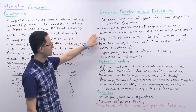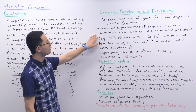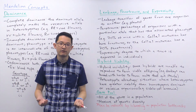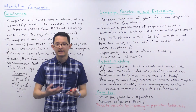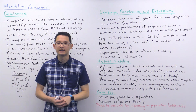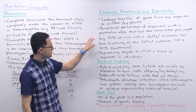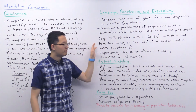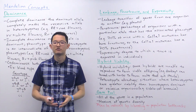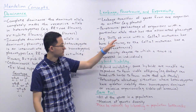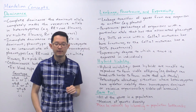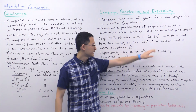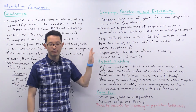Penetrance refers to the percentage of organisms with a particular allele that actually show the associated phenotype. Before, we assumed that having a certain allele always produces the phenotype, but that's not always the case. For example, if only 70% of mice with a particular allele show the phenotype, we say that mutation has 70% penetrance.